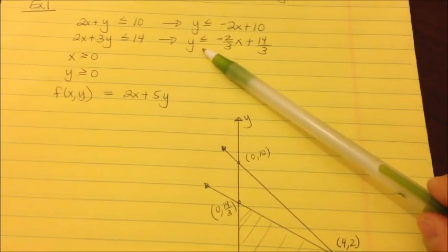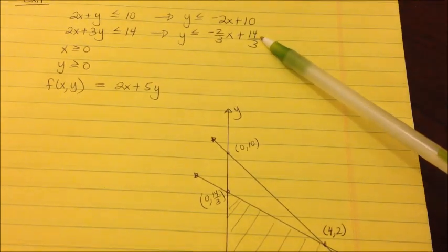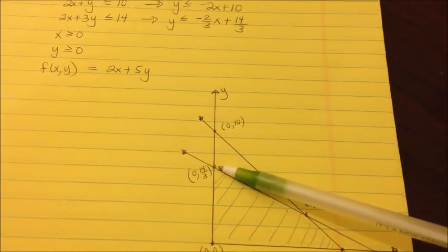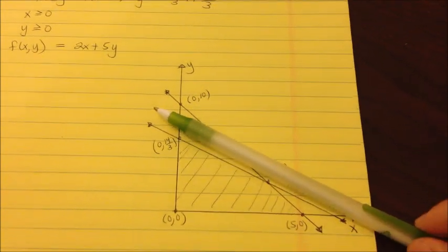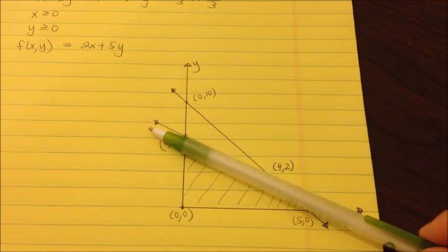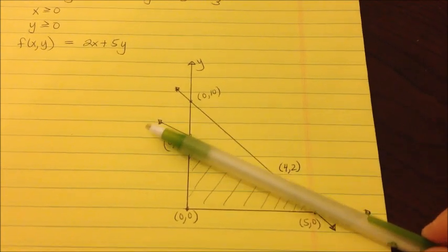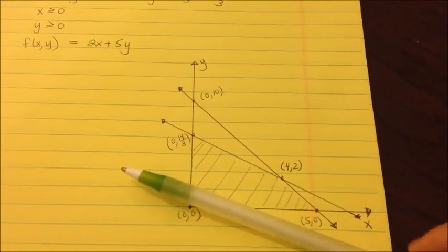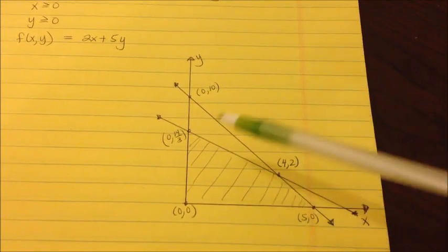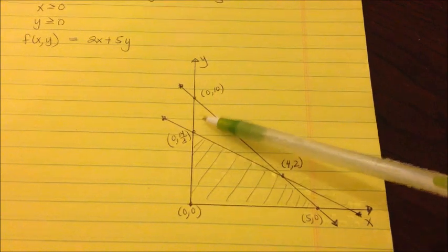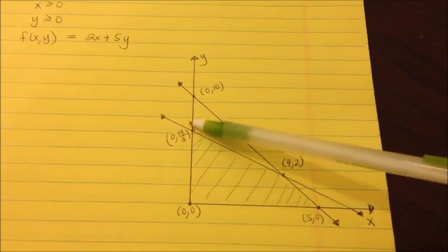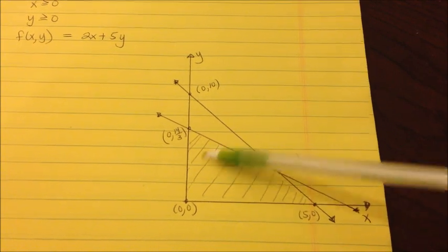For the second inequality, y ≤ -2/3 x + 14/3, the y-intercept is 14/3 and it's also less than, so we shade everything below that line as well. The solution region is where the shading from both equations overlaps — that overlapping region is our solution set.